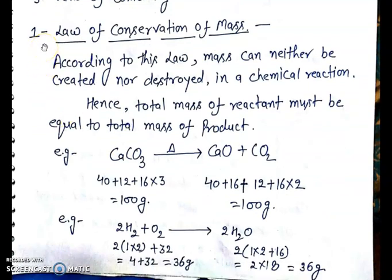First, the law of conservation of mass. According to this law, mass can neither be created nor be destroyed in a chemical reaction. Hence, the total mass of the reactants must be equal to the total mass of the products.